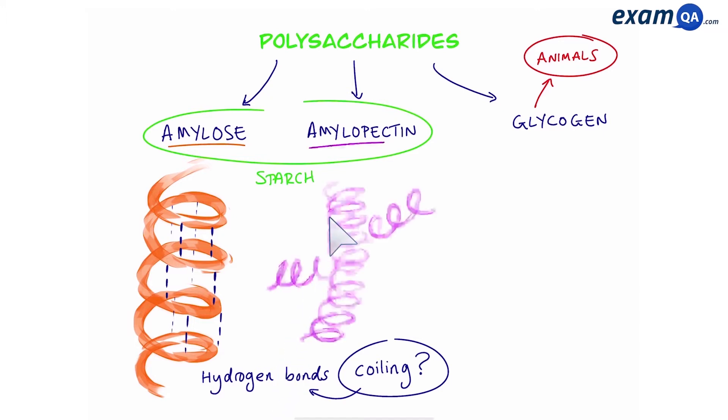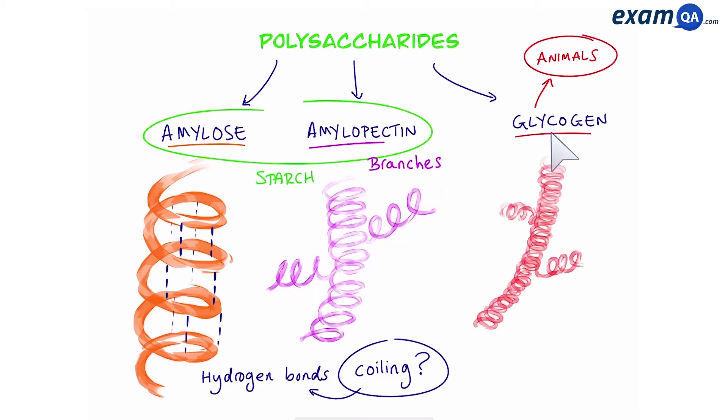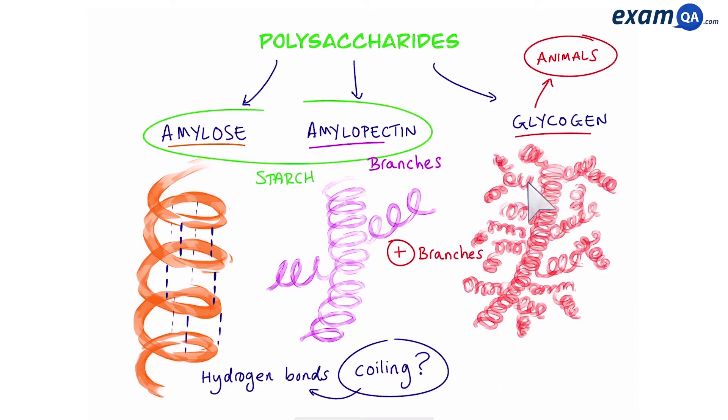Moving on, amylopectin looks quite similar to amylose except it has branches, and glycogen looks very similar to amylopectin except it has way more branches and the branches are shorter. Okay so let's talk about what causes branches to occur.